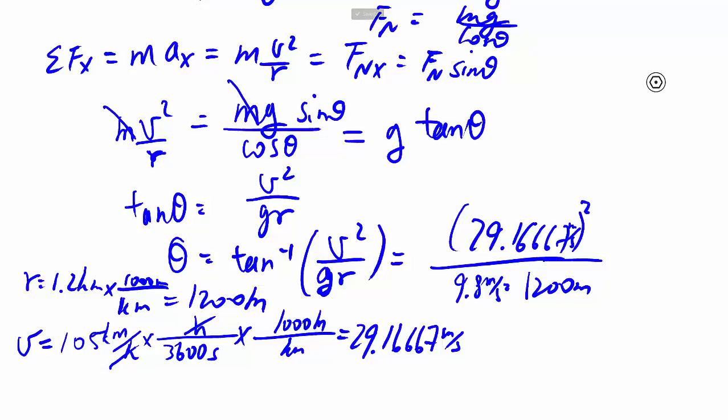So 29.16667 meters per second squared, and hopefully you'll see that all the units cancel out because you have meters squared per second squared, and then meters per second squared times a meter. So all the units cancel out as we expect, giving us just a ratio. I get 4.14 degrees.